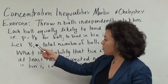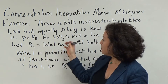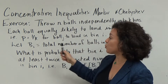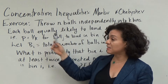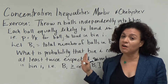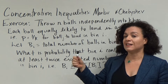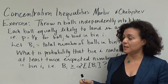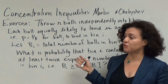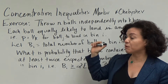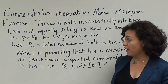The probability that any ball j lands in bin i is 1 over k. You may recognize this as a Bernoulli trial setup — a ball landing in a bin counts as a success, so we're thinking of throwing each ball into the bin as a Bernoulli trial.